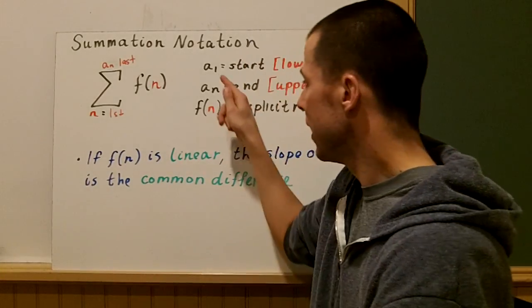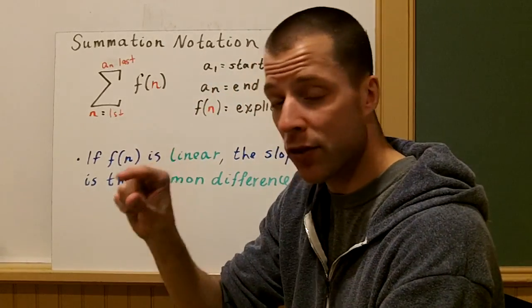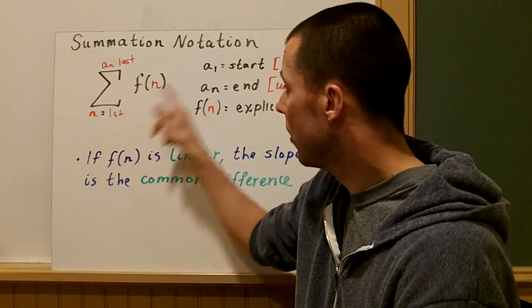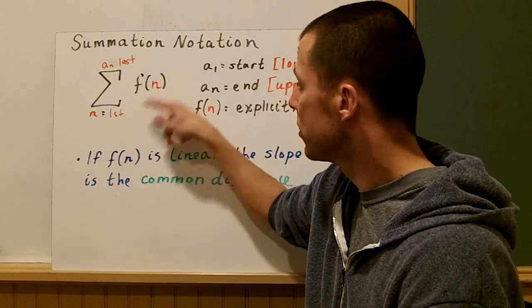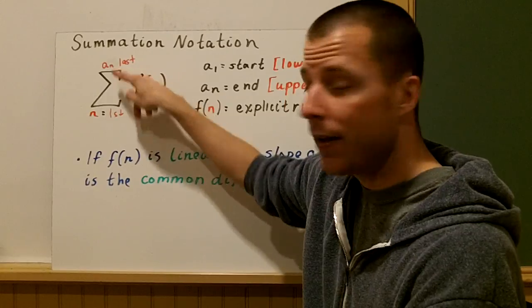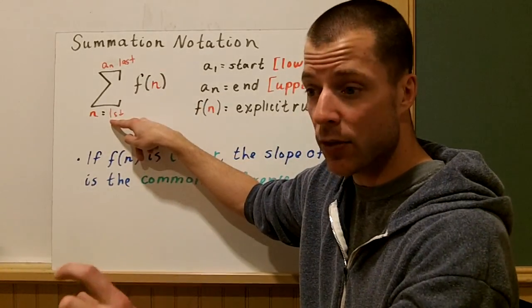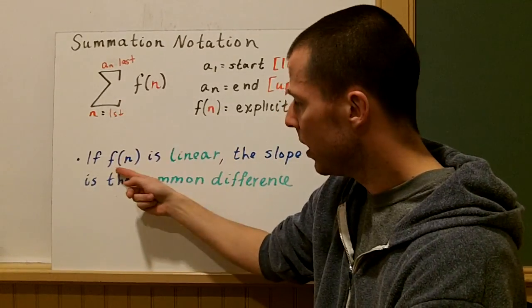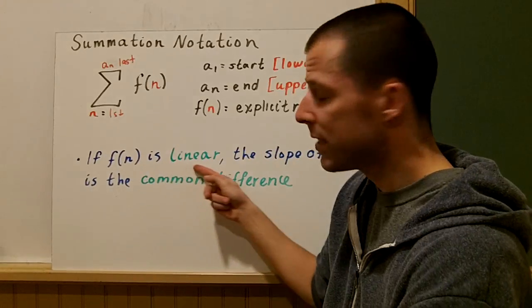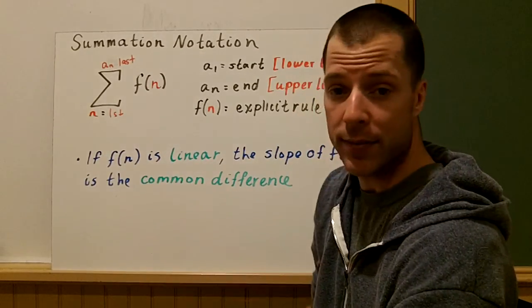It's important to know that a_1, yes, it's where you start, but it's not the first term. Don't think of this as what's my first term and it's equal to that number. You'll see that in the next example. One important distinction: if f(n) is linear, whatever the slope of f(n) is, that's the common difference.